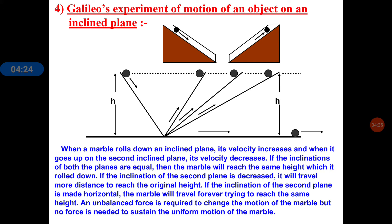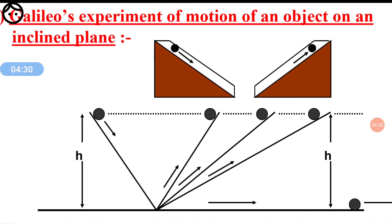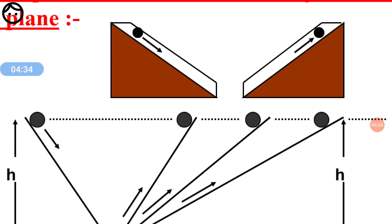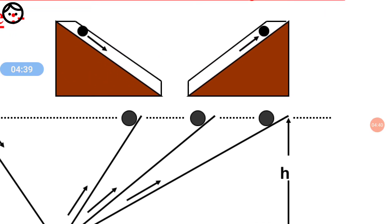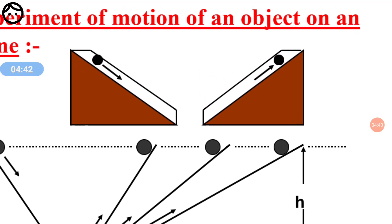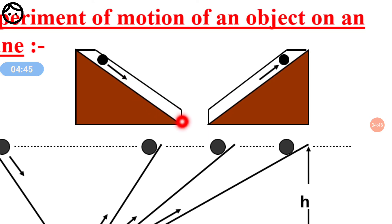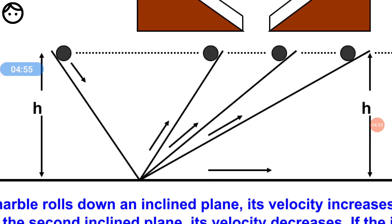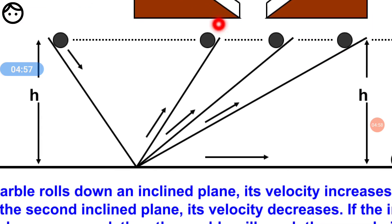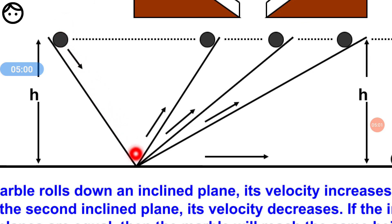Galileo performed an experiment. You can see what they did in the picture — they took two inclined planes, a first plane and a second plane. They slid one small ball down the first inclined plane. The ball came down. Then going up the second plane, the ball came down slowly and the velocity increased going down but decreased going up.